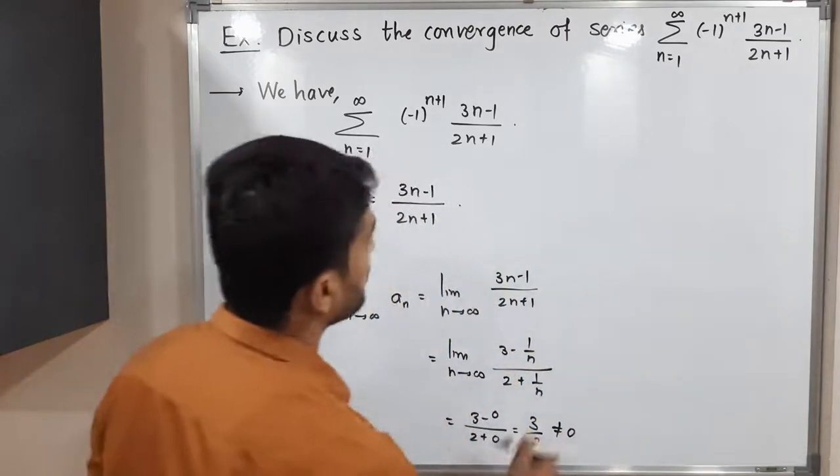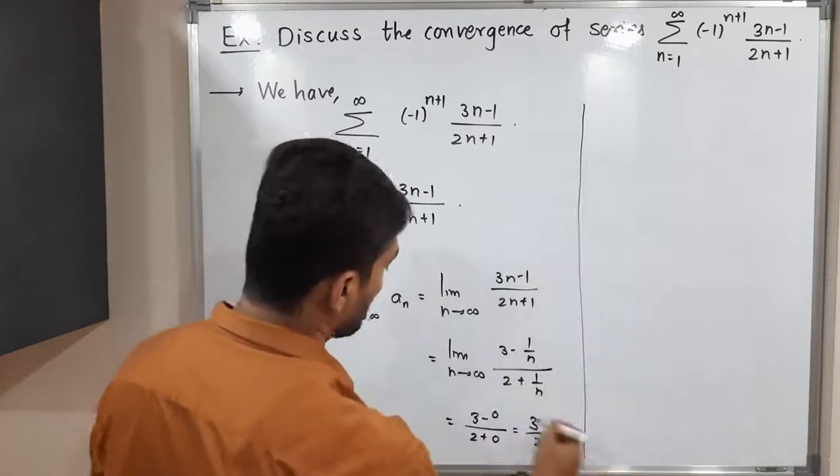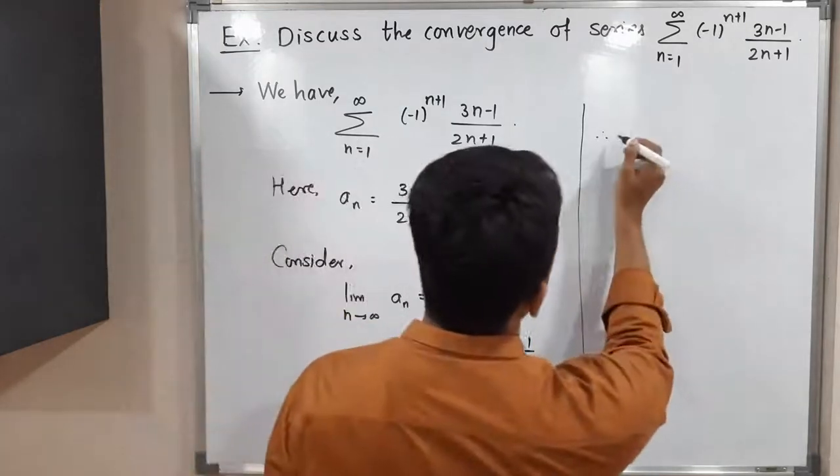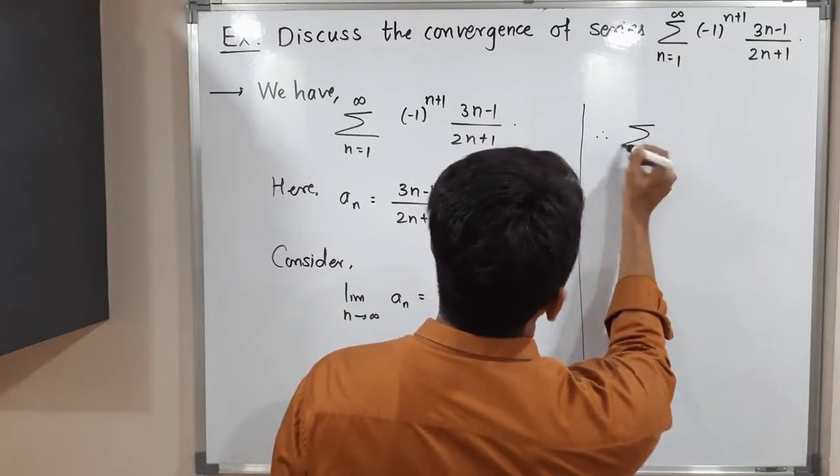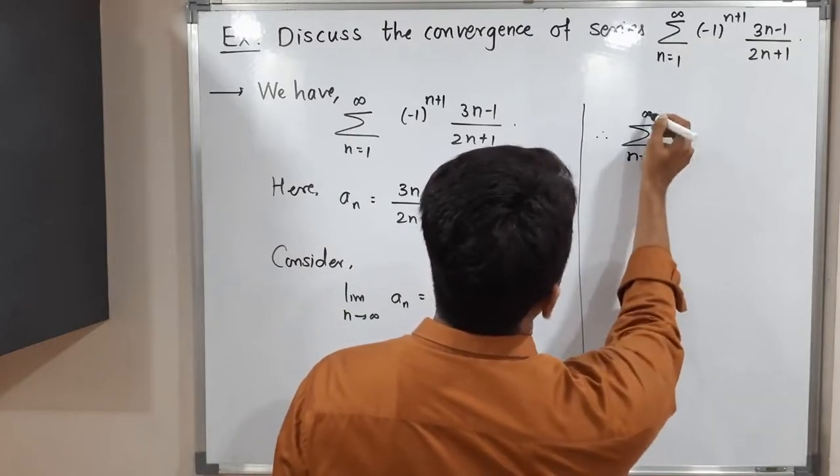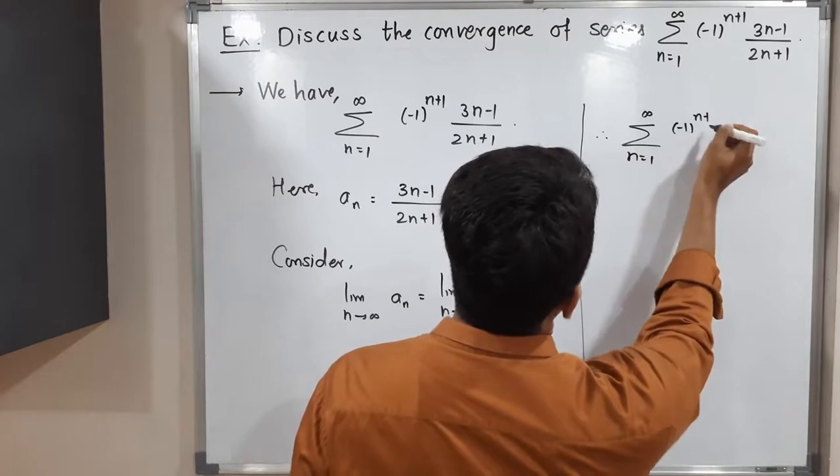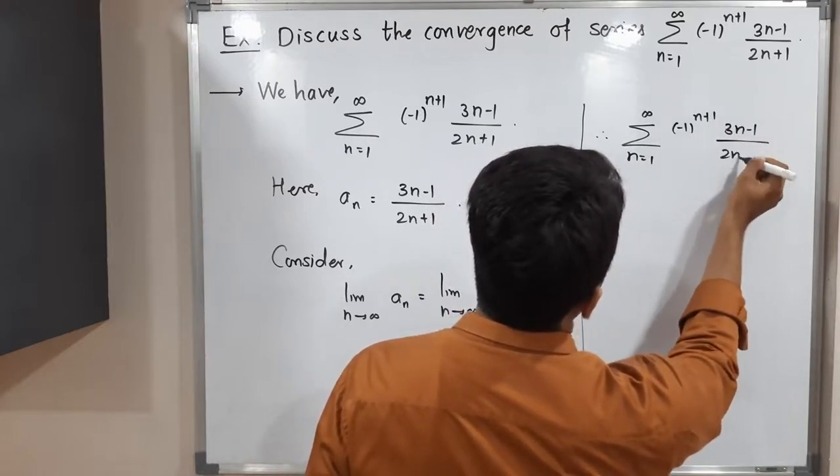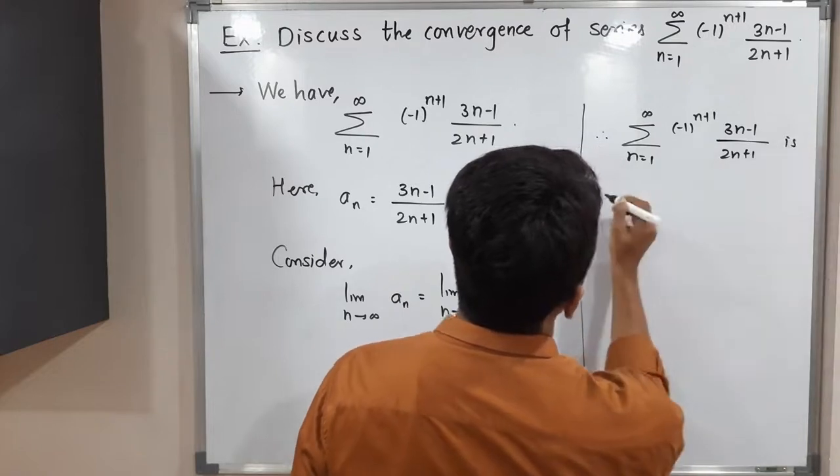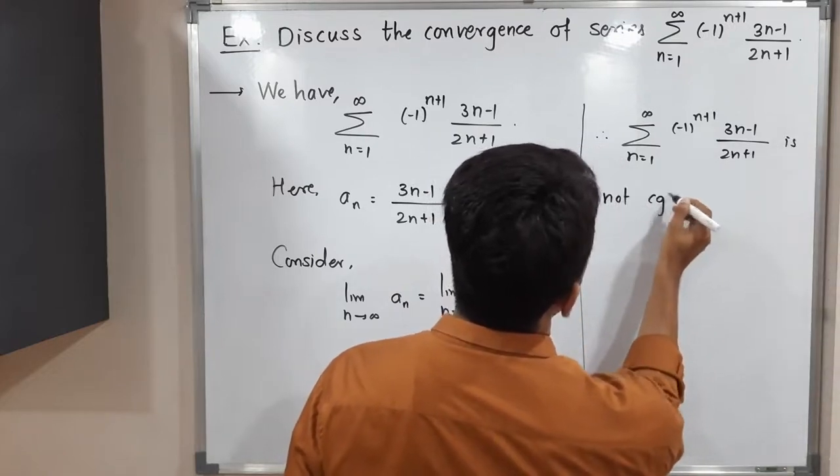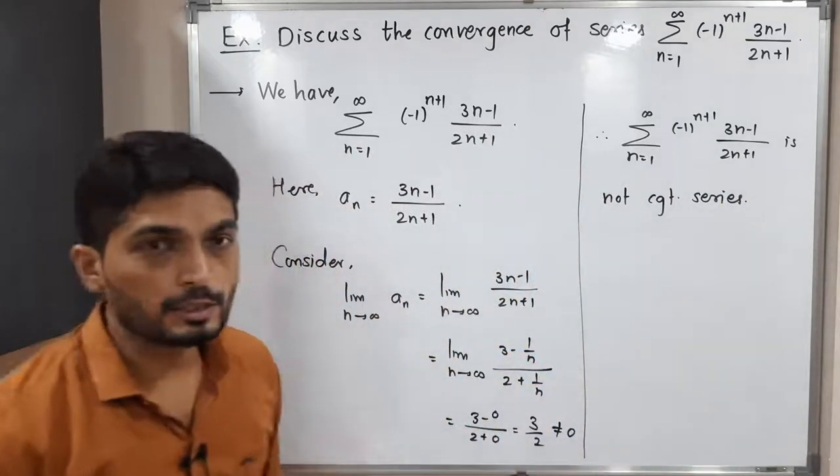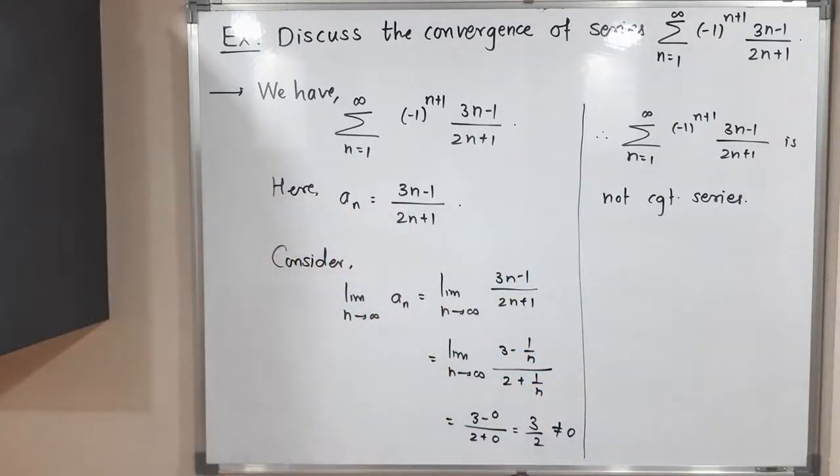So since this is a basic condition to converge any series, and this condition is not satisfying here, therefore summation n running from 1 to infinity minus 1 raised to n plus 1, 3n minus 1 upon 2n plus 1, is not convergent series. So this is our conclusion. Make a screenshot of it, then we will stop. Thank you, bye-bye.